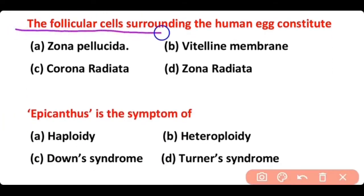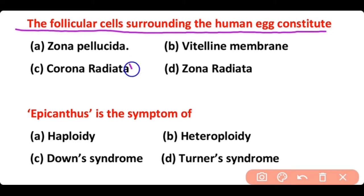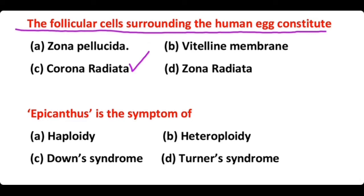The follicular cells surrounding the human egg constitute: zona pellucida, white line membrane, corona radiata, or zona radiata. The correct answer is option C. Follicular cells surrounding the human egg constitute the secondary egg membrane, that is corona radiata.